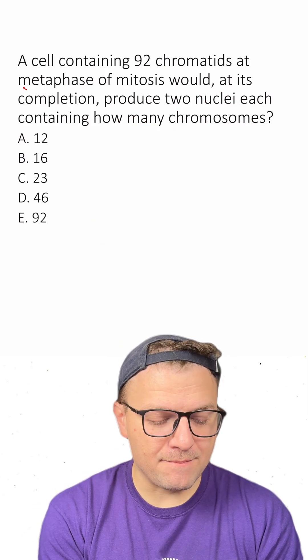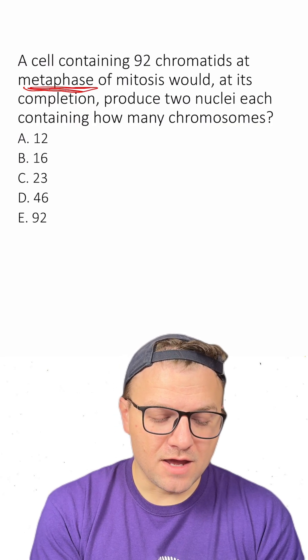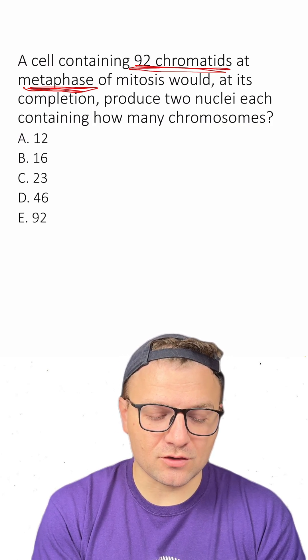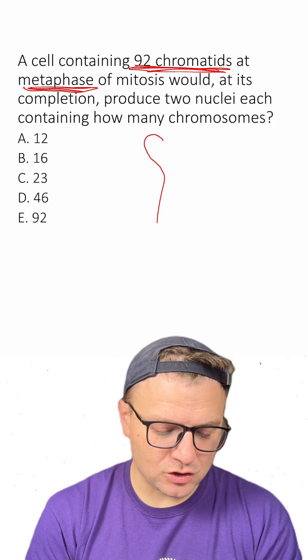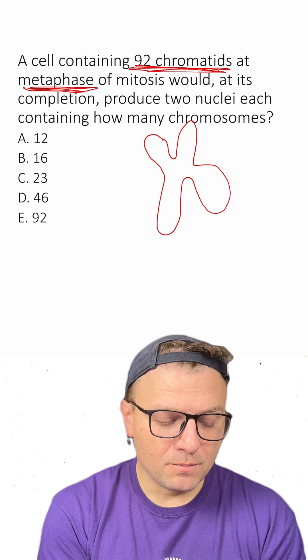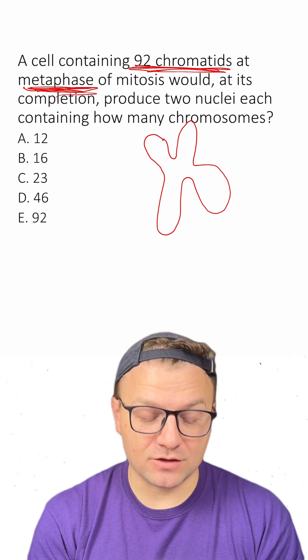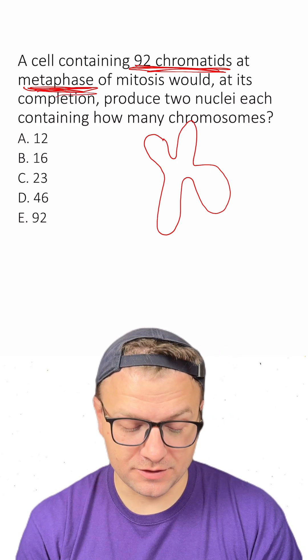Now since the cell is at metaphase, there are going to be 46 chromosomes, not 92, because these chromosomes have two chromatids instead of one. At metaphase, they're going to have two chromatids in a chromosome.